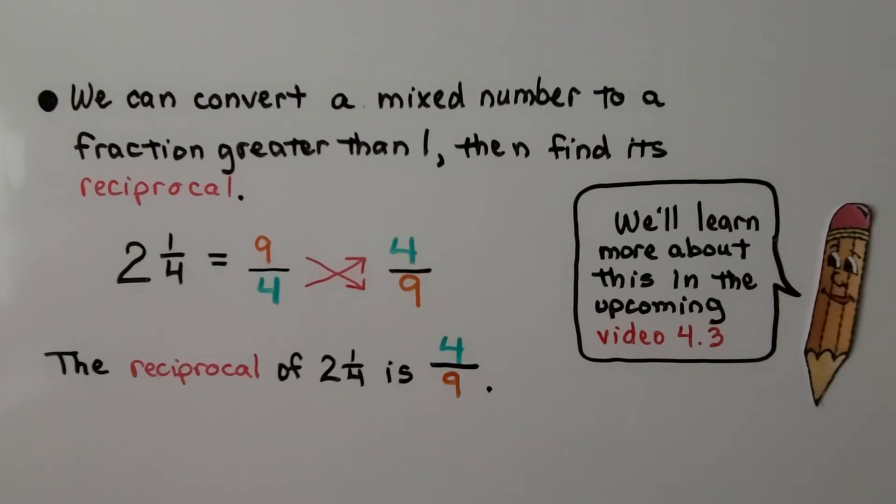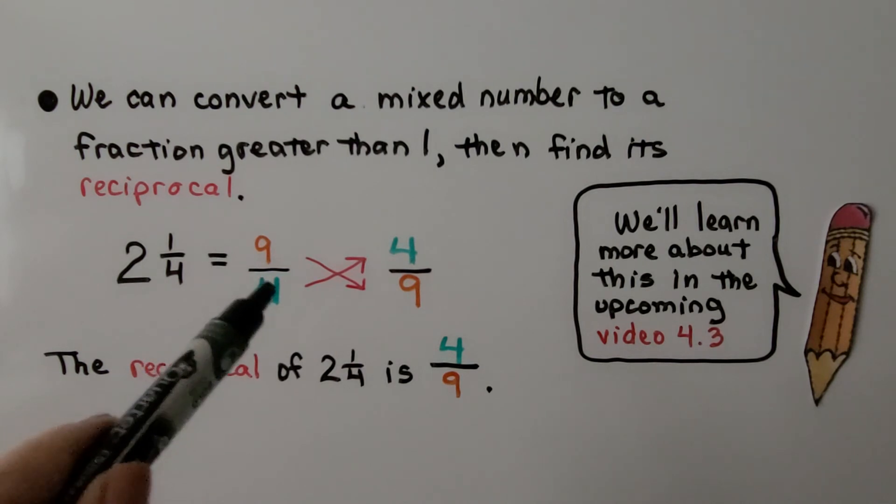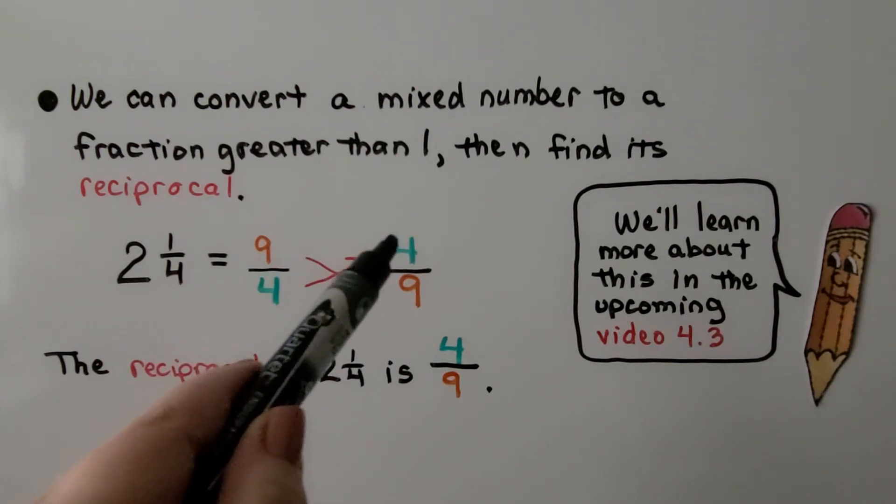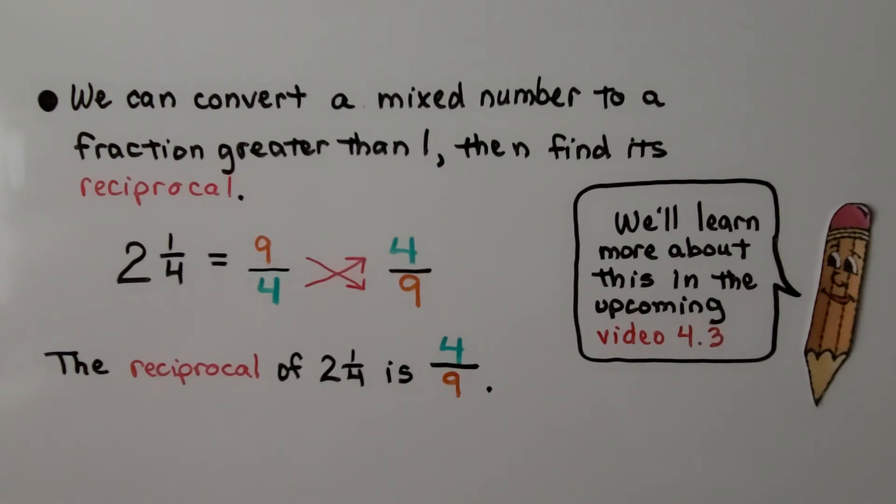We can convert a mixed number to a fraction greater than 1, then find its reciprocal. If we have 2 and 1/4, we've learned we can multiply the whole number to the denominator, then add the numerator. So we have 2 times 4 is 8, plus 1 is 9, and we write it over that denominator. So 2 and 1/4 can be written as a fraction as 9/4. If we flip it around to 4/9, that will be the reciprocal. The reciprocal of 2 and 1/4 is 4/9. We're going to learn more about this in the upcoming video, 4.3. So this was just a little heads up.